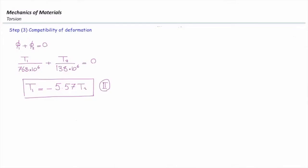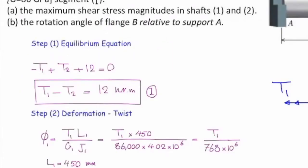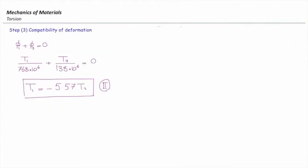This is the second equation that we are looking for. Now, combining this equation, equation number two, and equation number one here, we can solve and determine torques. This is what we do in step number four. Combining one and two gives us this equation. And T2 will be equal to negative 1.823 kN·m. And T1 will be equal to 10.17 kN·m.